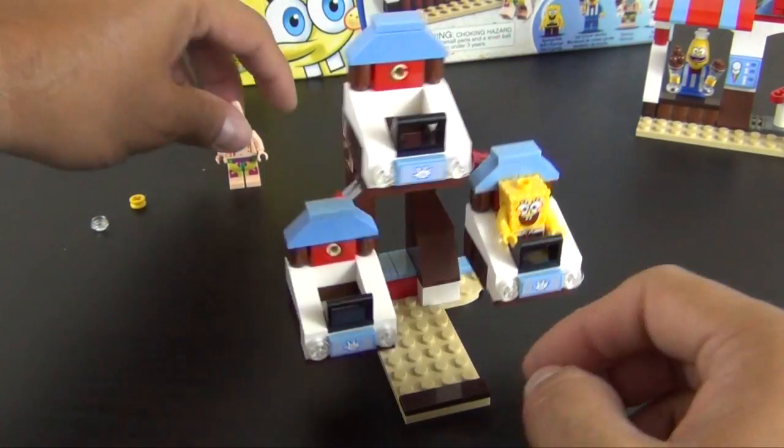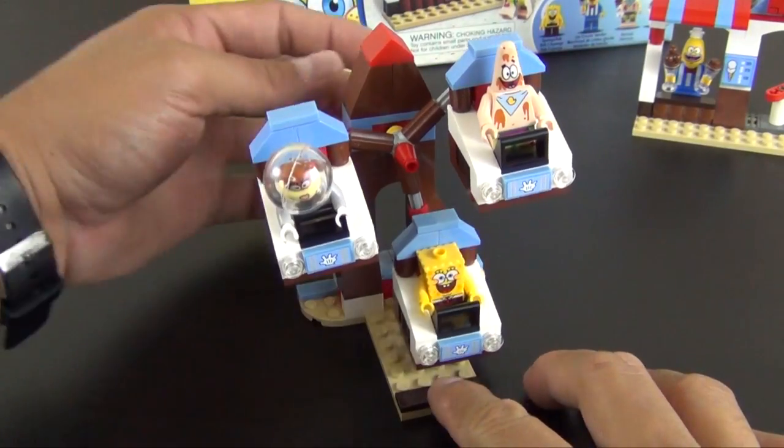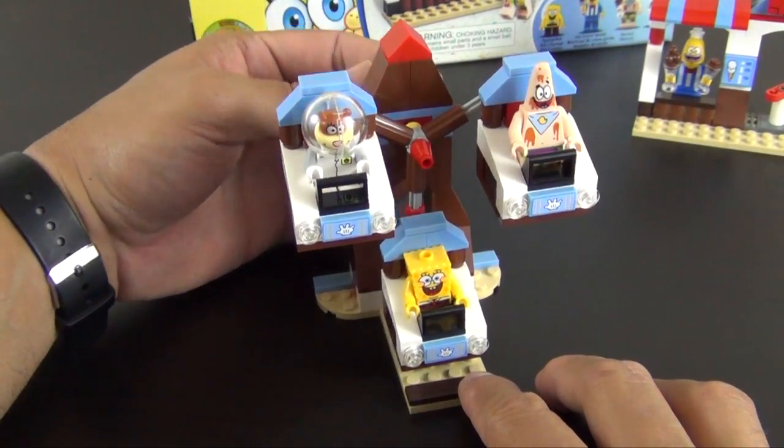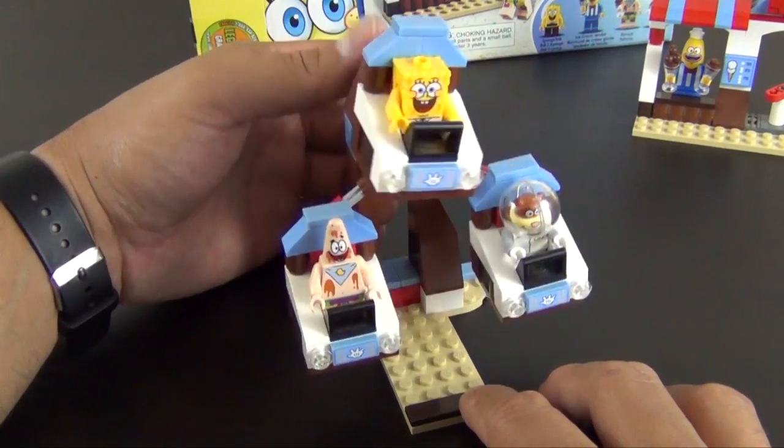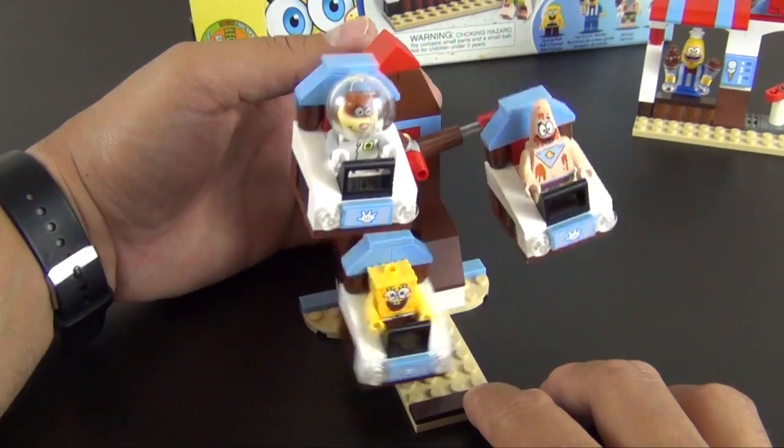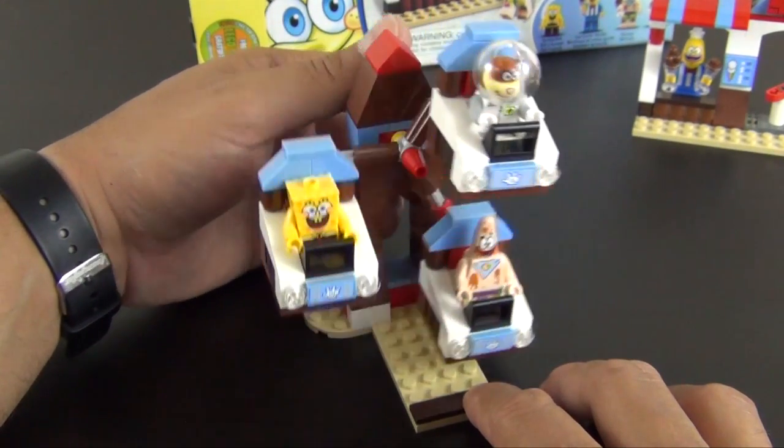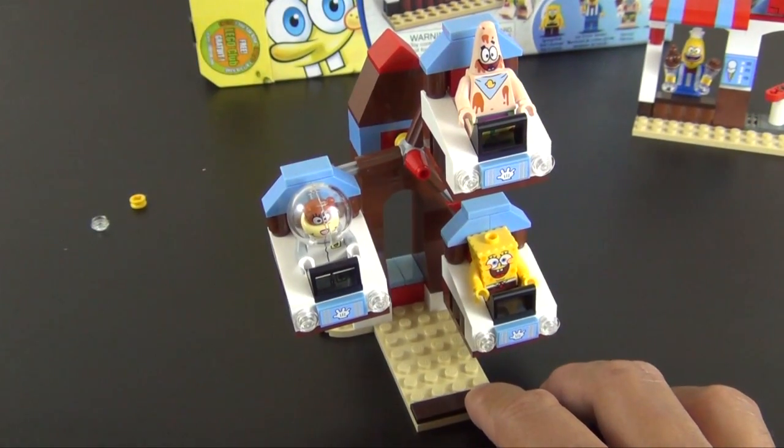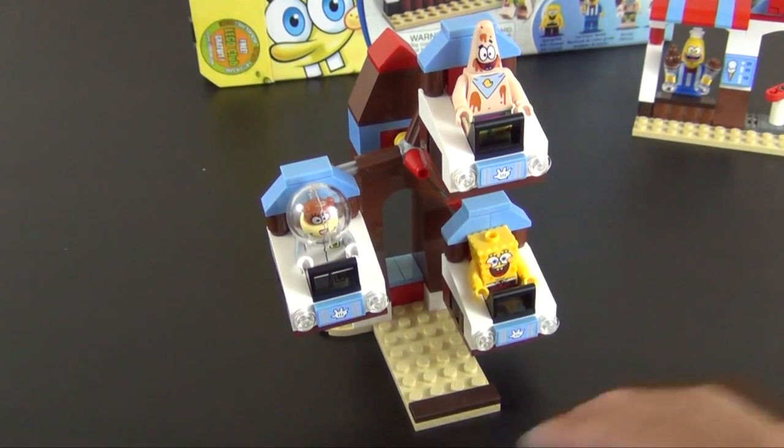We can put SpongeBob in there, Patrick in there, and even Sandy in there. Sandy may actually sit a little bit better, yeah. Check that out, pretty cool. That can be motorized pretty easily. Of course you don't want it to go too fast, you kind of want it to go pretty slow. So you can probably motorize it with a worm gear, something that converts high RPMs to slower RPMs. So that is it for the SpongeBob SquarePants Glove World set.